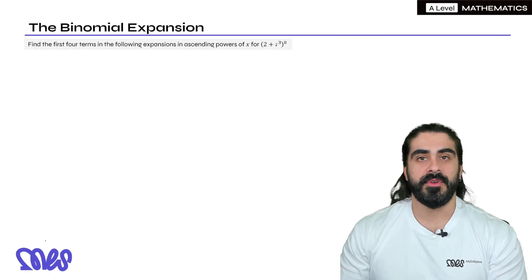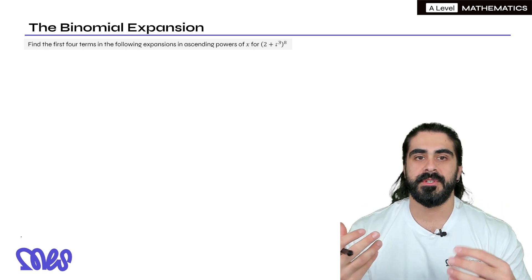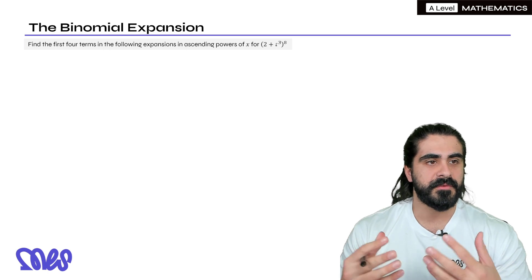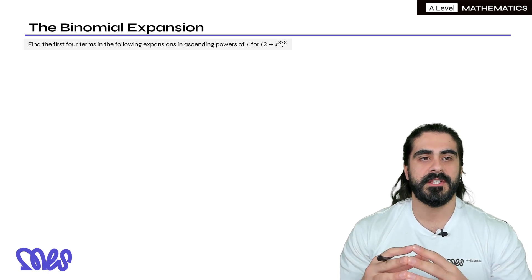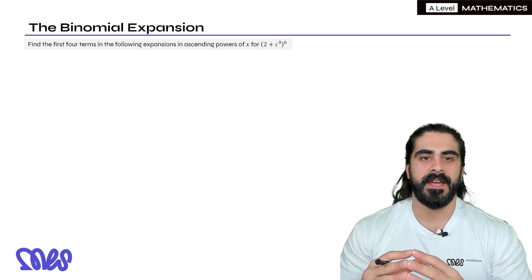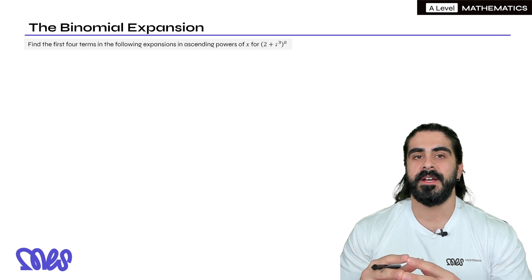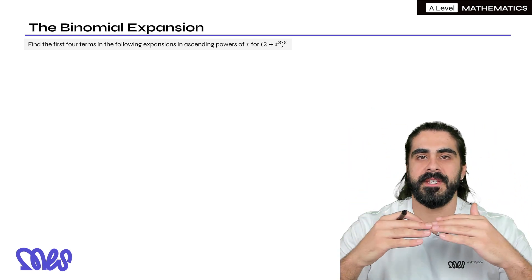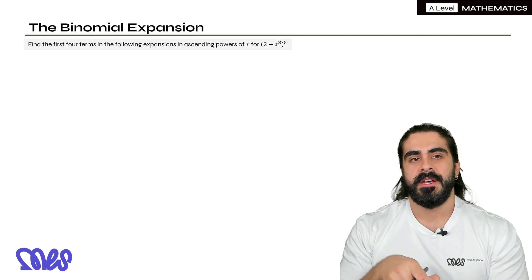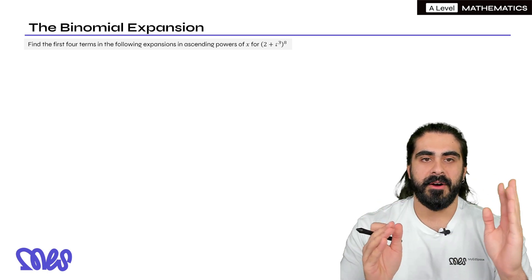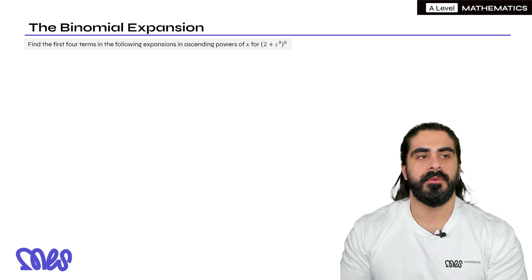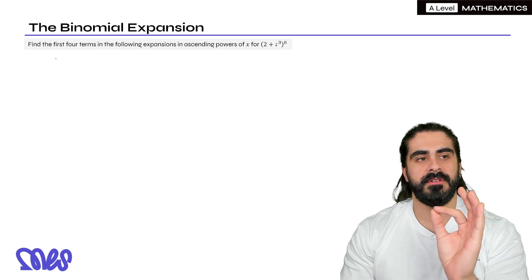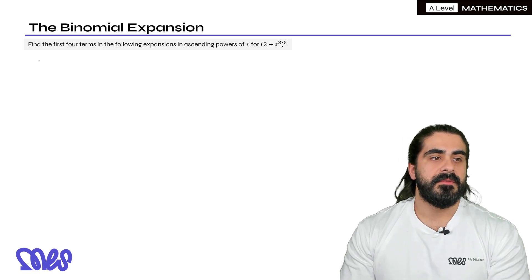So this takes us to the binomial expansion, and this is really useful for when we deal with powers that are quite large, and also to be honest because we just don't want to remember what the triangle is. So find the first four terms in the following expansions, in ascending powers of x, 2 plus t cubed, to the power of 8. So in the last episode what we did was, is we would write Pascal's triangle all the way to the eighth row, and those were the coefficients, and remember one of the terms goes up in power, one of the terms goes down in power. But here they only want the first four terms.